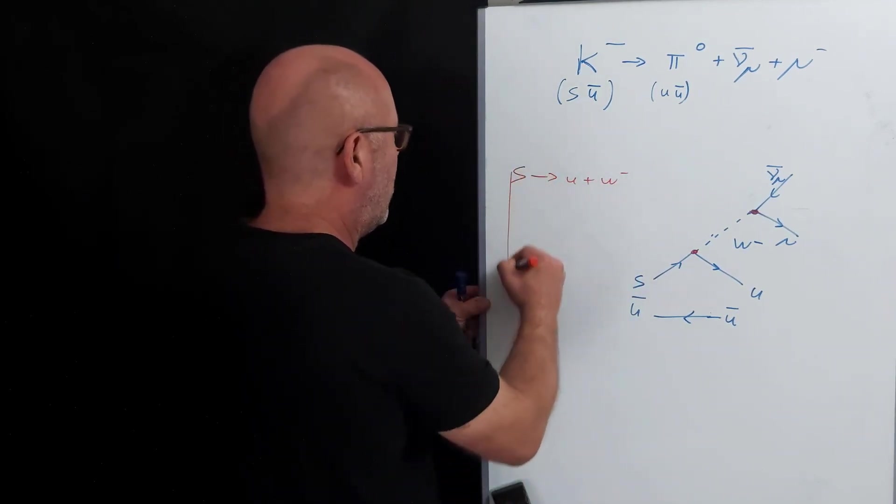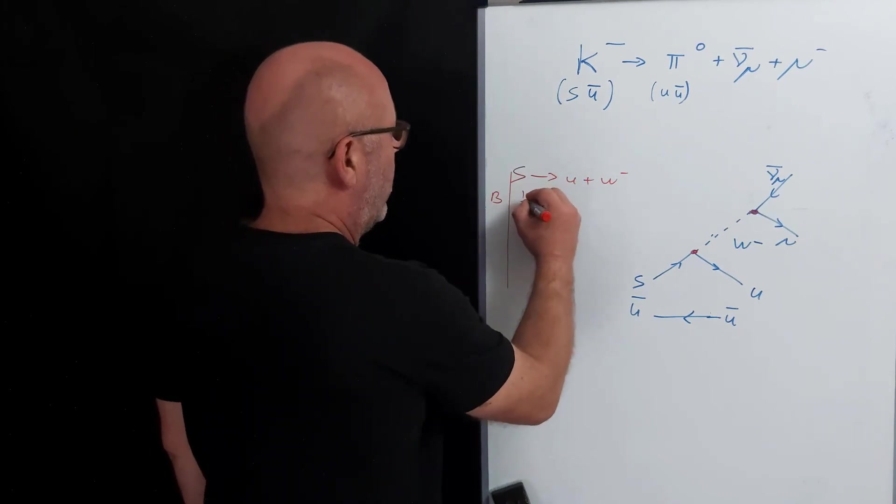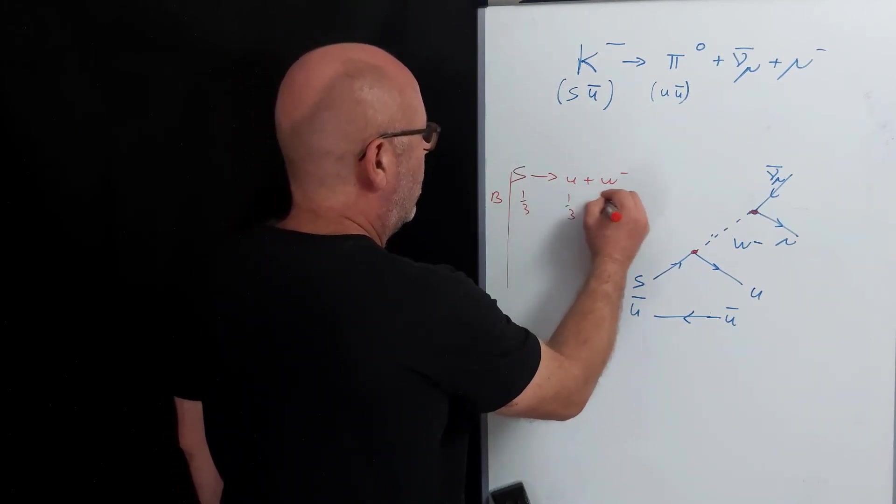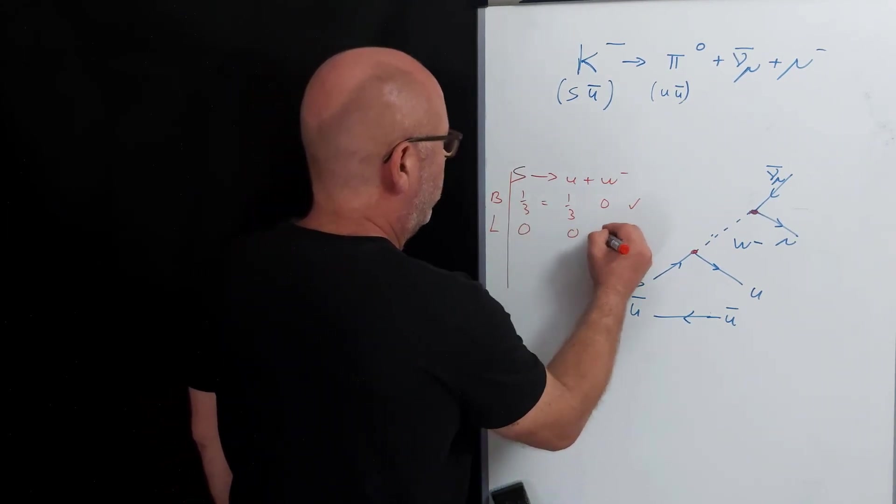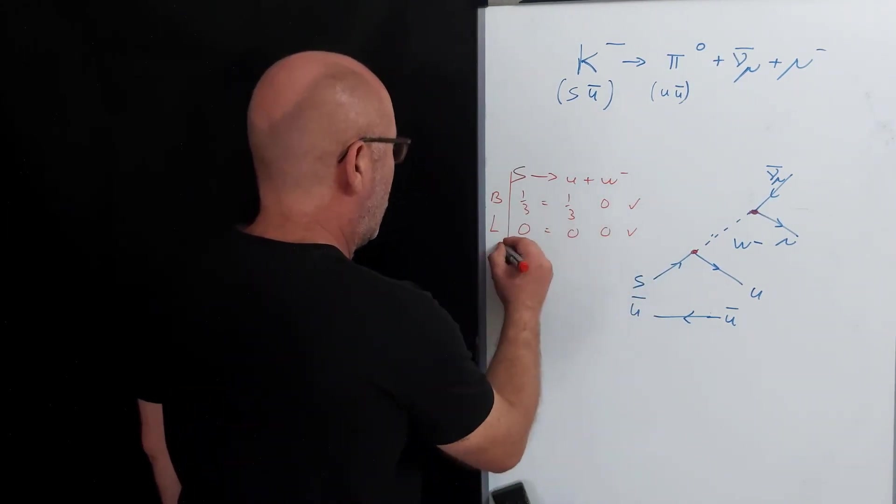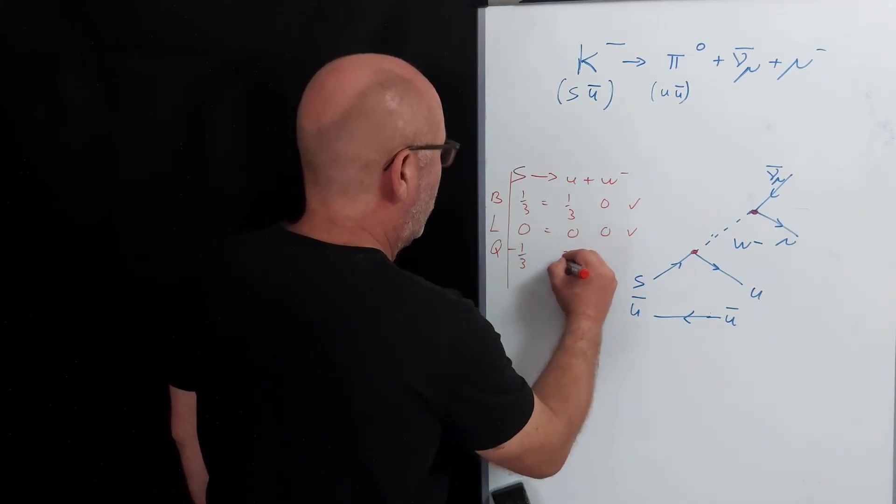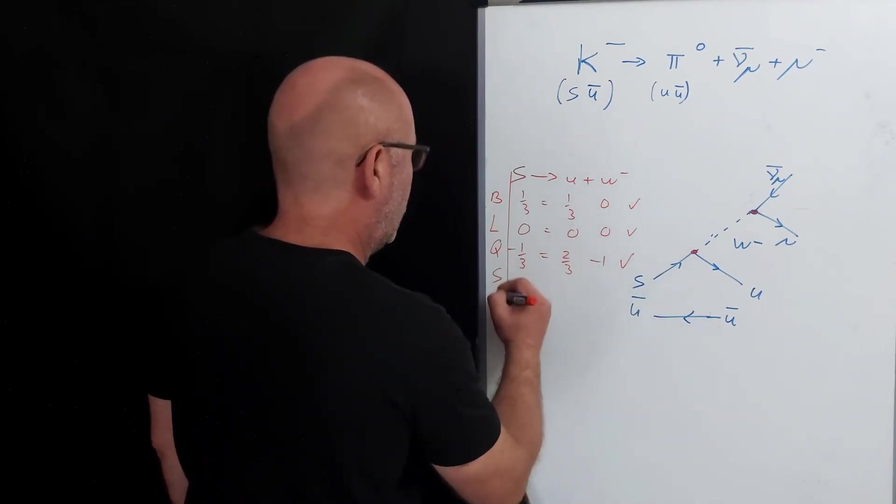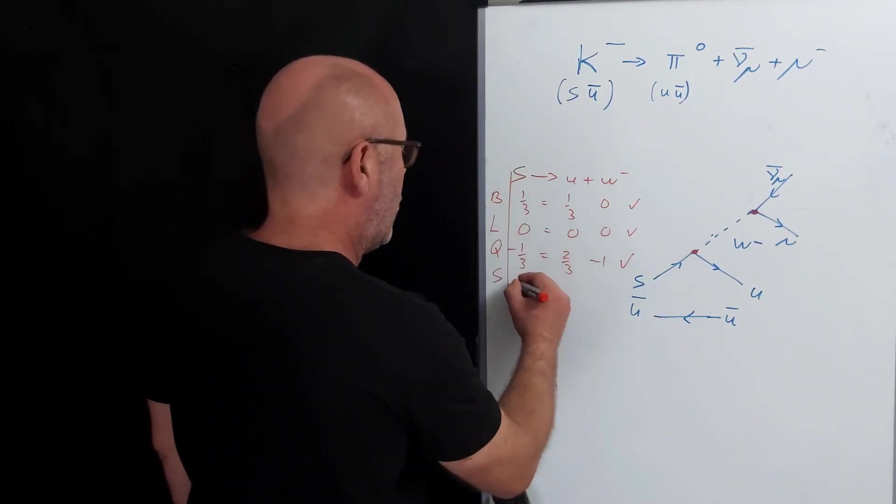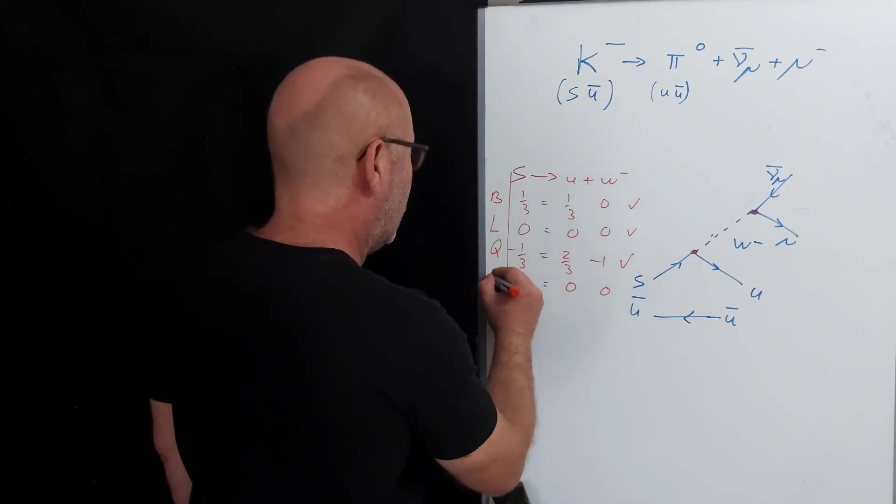So let's check the numbers. Baryon number, one-third, one-third, zero. Check. Lepton number, zero everywhere. Check. Charge, minus one-third, two-thirds, minus one. It's equal. Check. Strangeness, it's a strange quark, so minus one. Up quark, no strangeness, zero. Strangeness is not conserved. But this is a weak force which is involved. Therefore, in that case, it's okay to have strangeness not conserved.